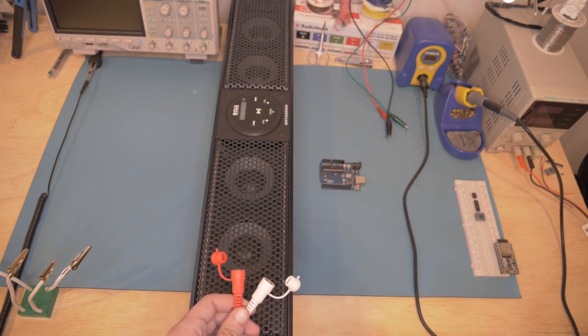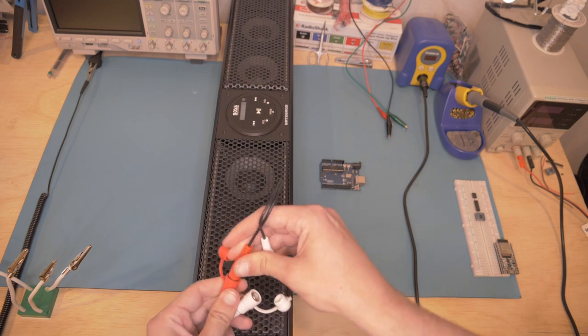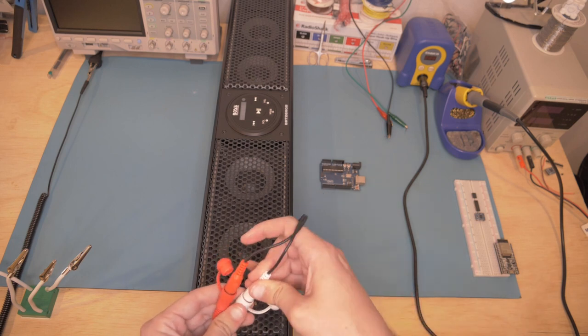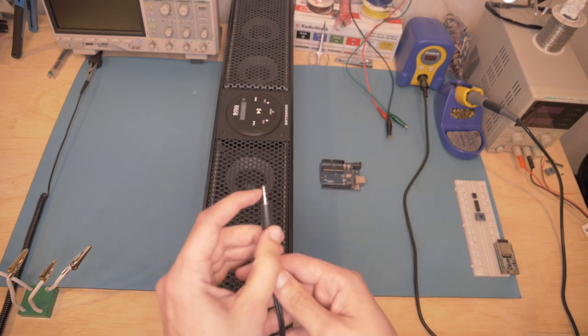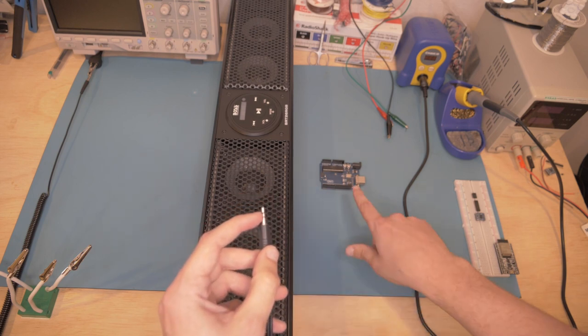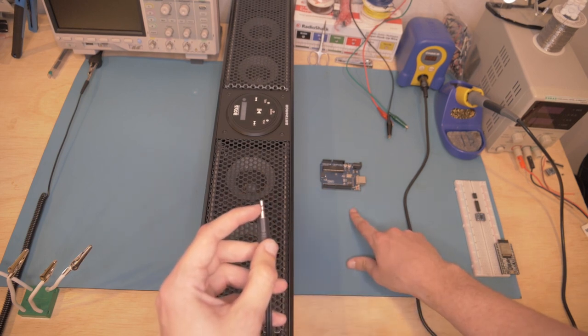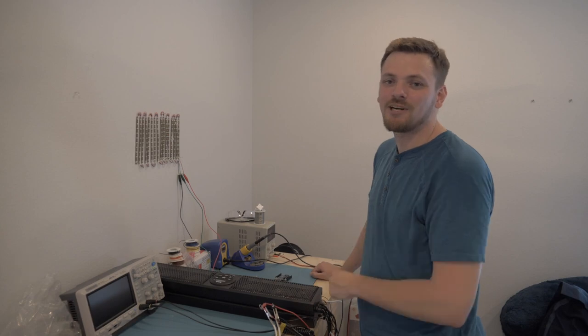So, I should be able to take an RCA to 3.5mm audio converter and then feed the audio signal that is coming off of the converter straight to the Arduino Uno, right? Well, no. It's more complicated than that.